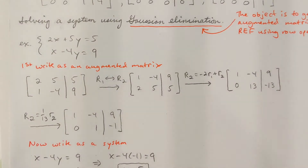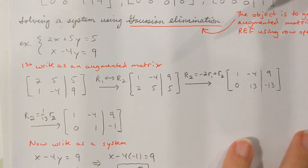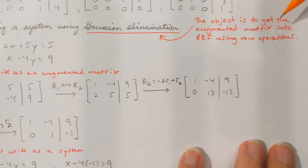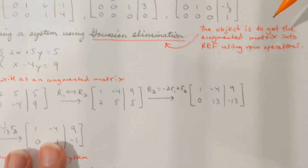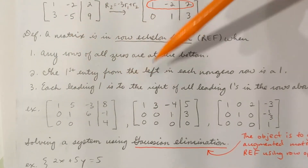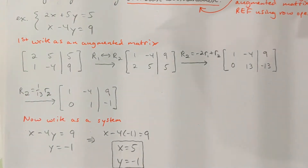I'd like to finish up section 6.4 now, which is going to be the rest of what we'll do in the course. We're talking about solving systems using matrices. The Gaussian elimination method is fancy words for matrices. When you solve a system using matrices, the idea is to get the augmented matrix into row echelon form by using your row operations. Let me show you some examples now of where we're solving systems by using matrices.